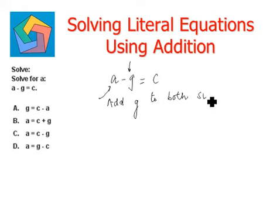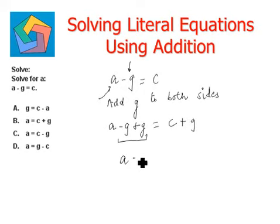Both sides—I repeat again—it is very important. a minus g plus g equals c plus g. Now, this negative g and positive g becomes 0. a equals c plus g is the final answer, which matches option B.